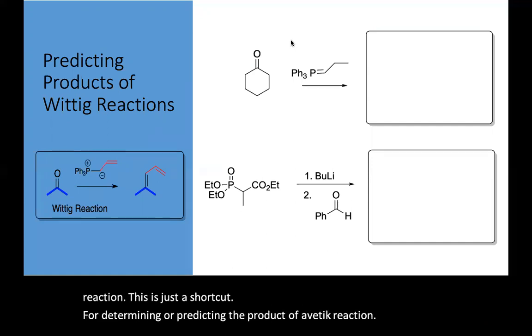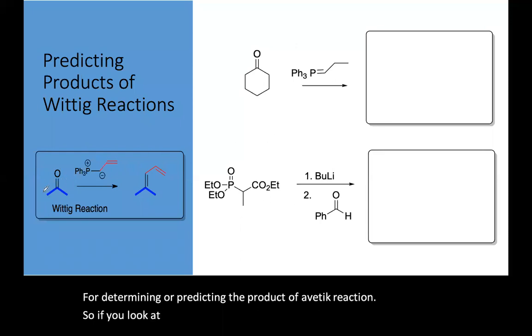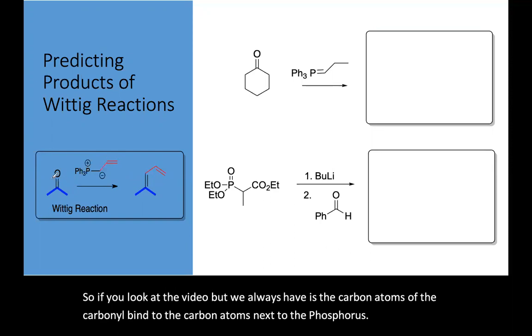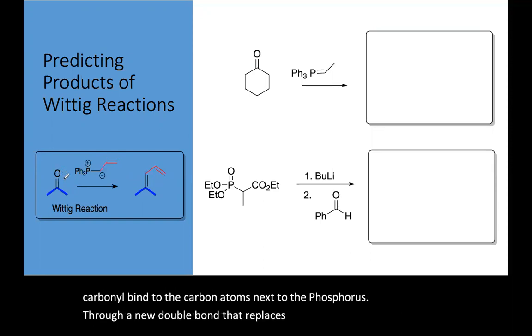If you look at the Wittig, what we always have is the carbon atoms of the carbonyl bind to the carbon atoms next to the phosphorus through a new double bond that replaces the double bond to the oxygen. This is very simplified but it means you can draw the product quickly.